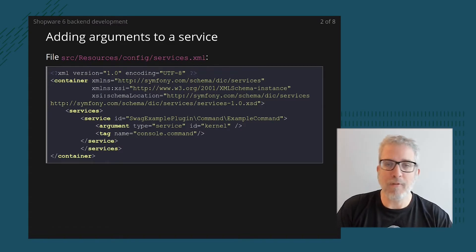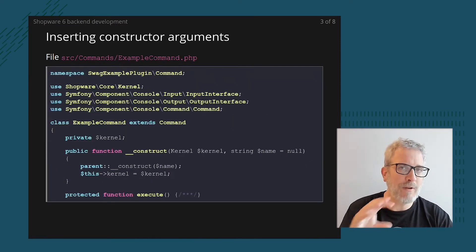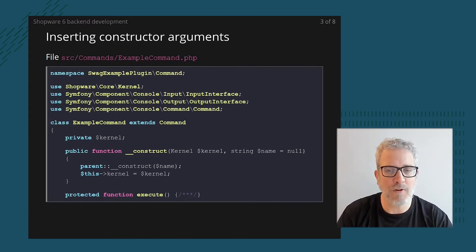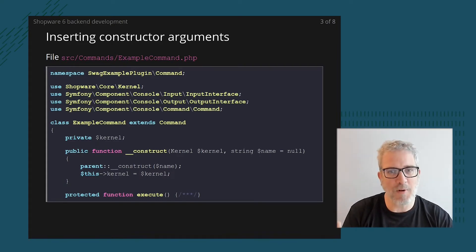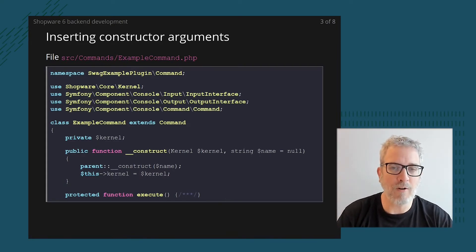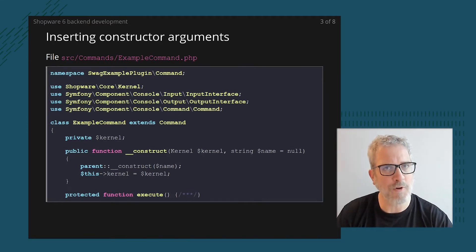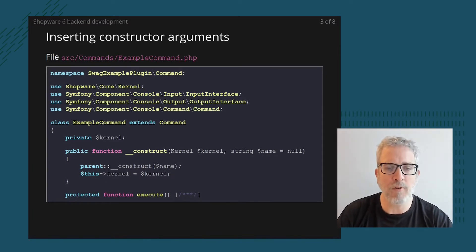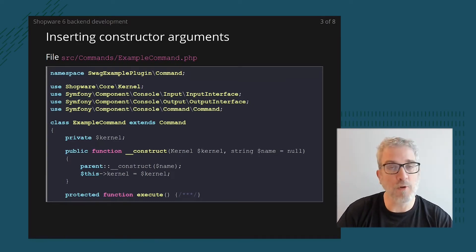So the first step is to extend the XML, and the second step is within the PHP class: we're going to inject the kernel we've defined as an argument into the PHP constructor. The constructor overrides the parent constructor — the name string belongs to the parent Symfony command constructor. We pass that name argument to the parent constructor, but in between we insert our own kernel and assign it to a private internal variable.